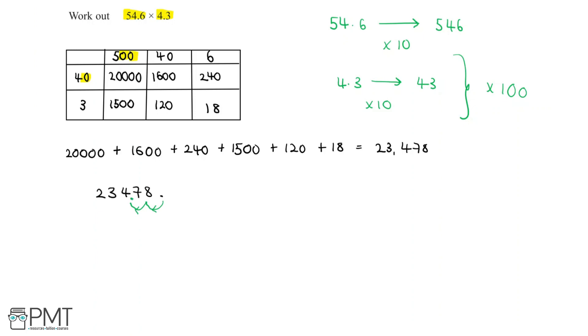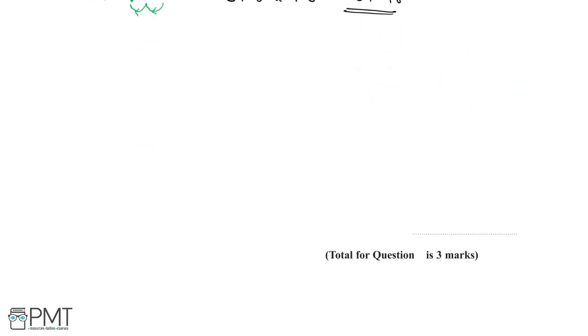So the answer to our question, 54.6 multiplied by 4.3 is equal to 234.78. And we can write this in the answer box below. 54.6 multiplied by 4.3 is 234.78.